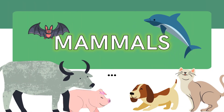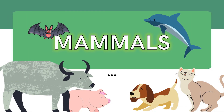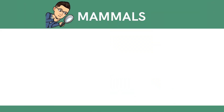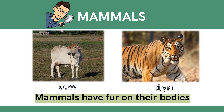Let us first discuss mammals. Class, what are these animals? They are cow and tiger. Will you describe their body coverings? Very good! They have fur on their bodies. Mammals have fur on their bodies.